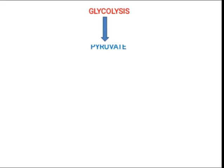In glycolysis we have two phases, and the second phase is known as the oxidative phase. In that oxidative phase we are getting ATP and we are getting NADH. As you can see, two NAD+ are converted to NADH. Meanwhile, at the end we are getting pyruvate.